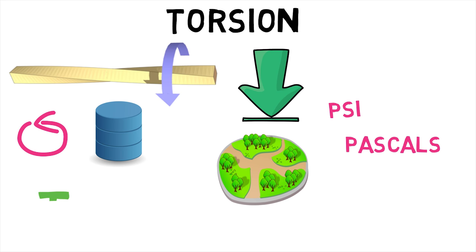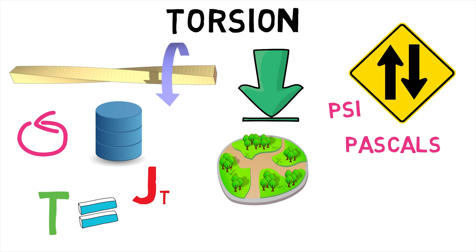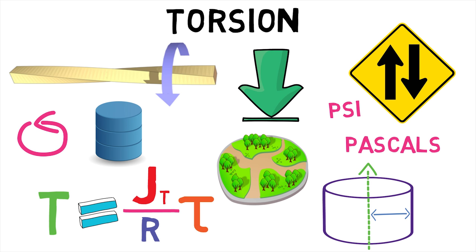For shafts of uniform cross-section, the torsion is given by the product of torsion constant J and maximum shear stress divided by the distance between the rotational axis and the outer surface R.